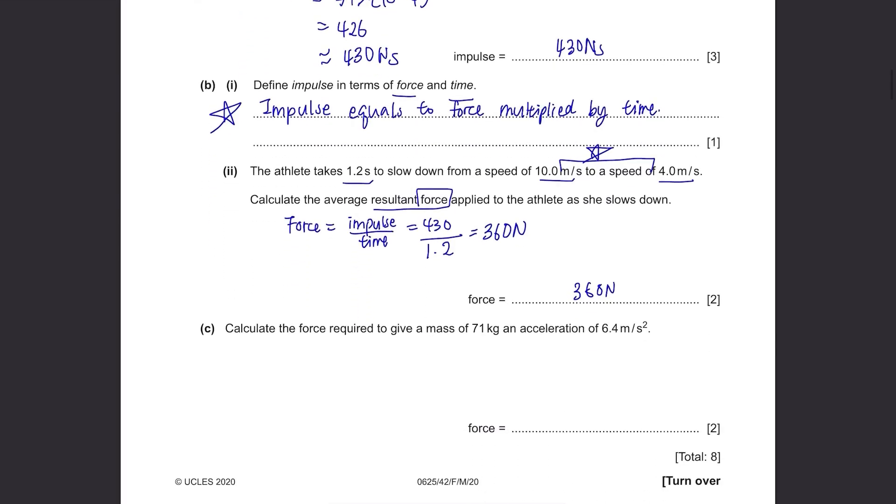Part C. Calculate the force required to give a mass of 71 kilograms an acceleration of 6.4 meters per second squared. The way they asked can sound confusing but just focus on what kind of information you're given. You're given a mass and an acceleration and you need to find the force. So it's simple. F equals ma. Force equals mass times the acceleration. Everything is given here. Just substitute the values and calculate it. You get 454.4 and rounded up to 2 significant figures, it's 450 newtons.